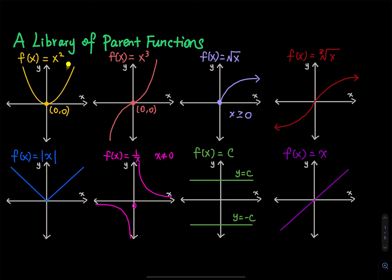The first one is f of x equals x squared. Everyone knows what the graph looks like — it's a parabola. This point is called the vertex, and the parabola is a U-shape that opens upward. You can call the vertex zero comma zero, the lowest point, or the minimum, because at this point you have the lowest y value.